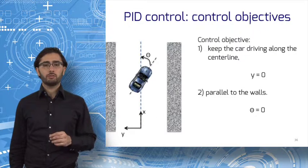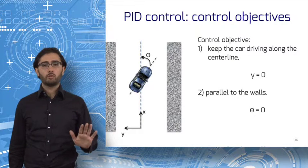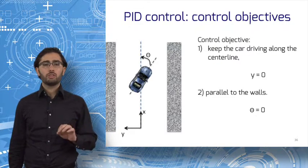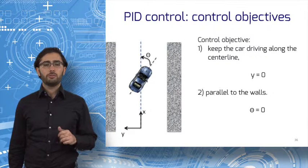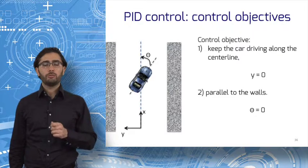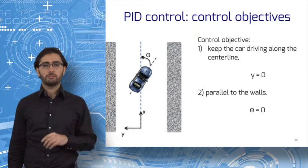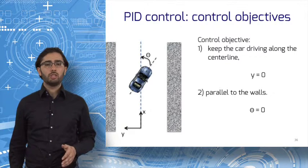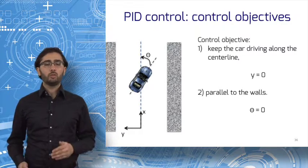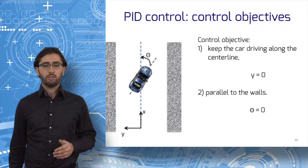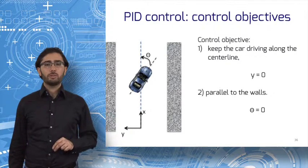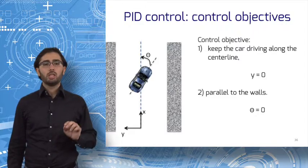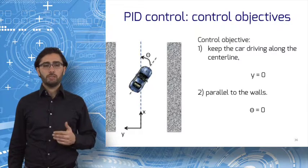Mathematically, we express these objectives as follows. First, define a global reference frame as shown. The origin is on the center line. Define the angle theta as the angle formed by the car and the x-axis. Driving along the center line is expressed as y equals zero. Driving aligned with the walls is expressed as theta equals zero. But we do expect the car to deviate from the center line, so we restate the second objective as follows.